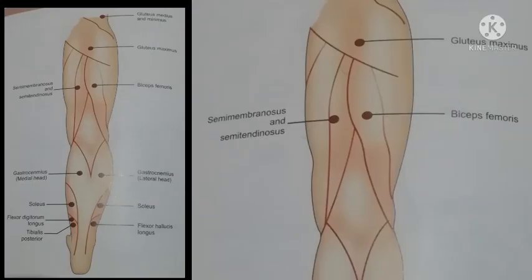The action of extensor digitorum brevis is extension of the second to fourth toes. Now to stimulate the muscles of the back of thigh (the hamstring muscles), the pad electrode should be on the middle of the back of the thigh. To stimulate semitendinosus and semimembranosus, the pan electrode should be on the lateral side of the posterior thigh.